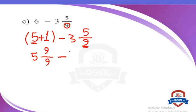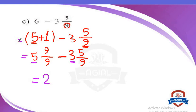Now it's easy. Whole numbers: 5 minus 3 equals 2. The fractions have the same denominator 9. 9 minus 5 equals 4. So the answer is 2 and 4 over 9.